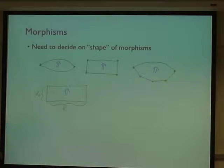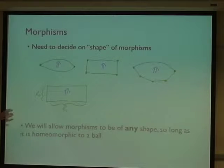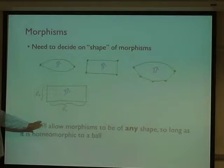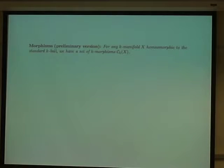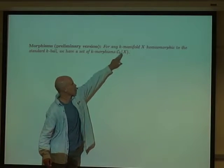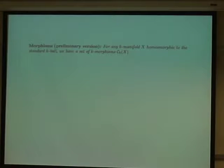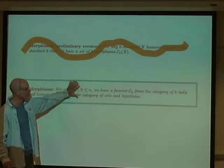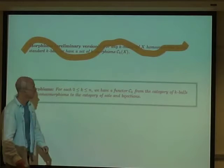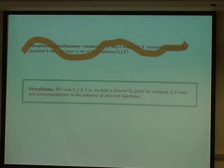So we like that idea. We're going to take this even further, we're going to allow our shapes, our morphisms to be based on any shapes homeomorphic to a ball. For any K-manifold which is homeomorphic to a ball, we have a set of K morphisms called C sub K. Lots of different families of K morphisms. But how are they related together? For each K in this range, we have a functor C to K from the category of K-balls with homeomorphisms to the category of sets and bijections.